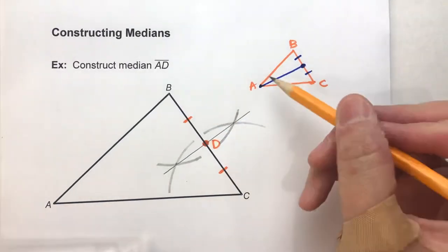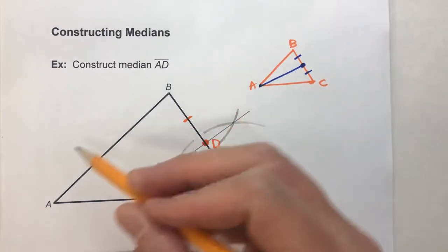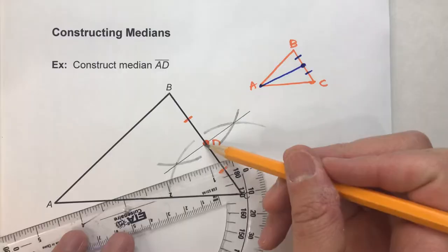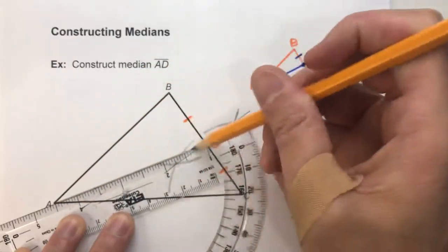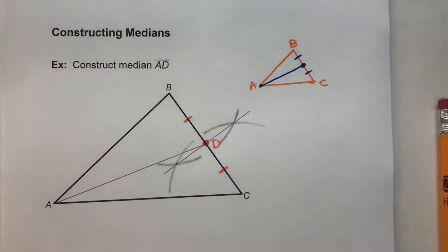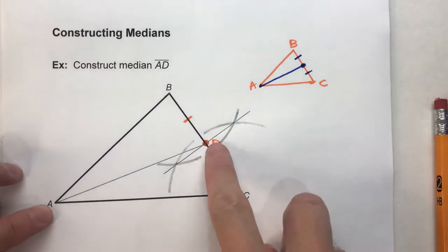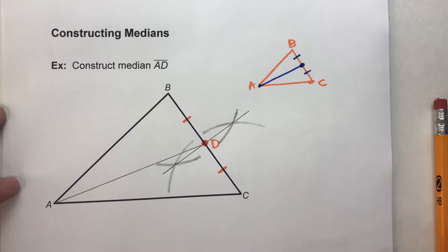Now, the median just goes from point A, the vertex of the triangle, to that midpoint. And there it is. There is the median of my triangle.